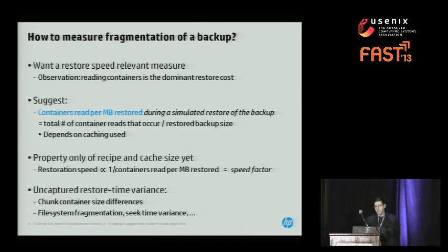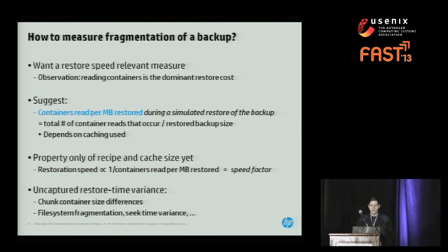We're not capturing every part of restore time variance in this metric — in particular, we're not capturing differences due to chunk container size, file system physical fragmentation, or variances in seek time because some containers are close together and some are far apart. But the majority of the variance is captured. This lets us, by comparing speed factor, tell which of two approaches is better without worrying about the exact details of the system we're thinking about.